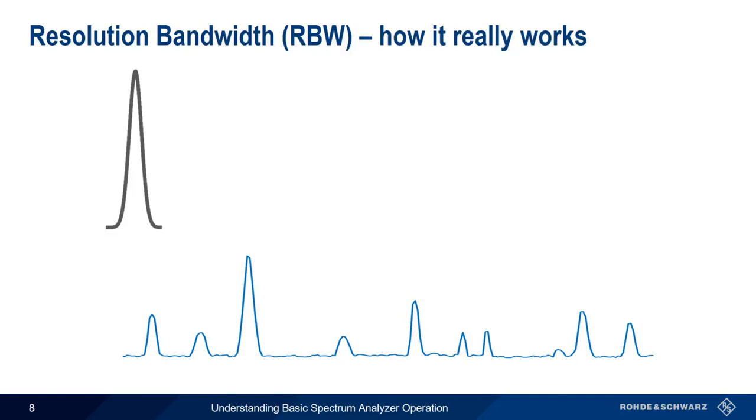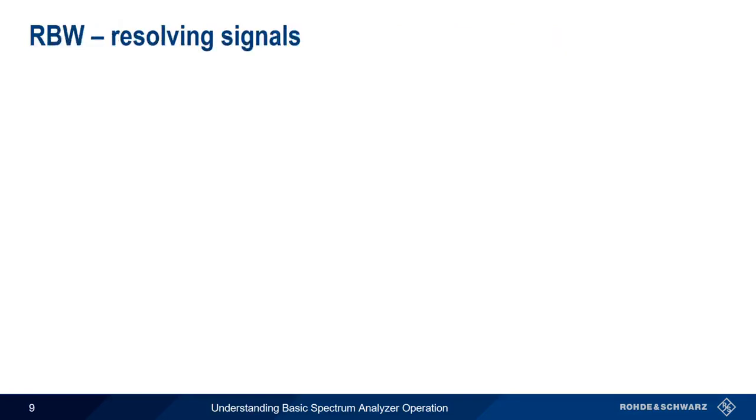Next, let's examine two ways that resolution bandwidth plays a critical role in spectrum analysis, namely separating signals and noise. Let's start with signal separation. As the name implies, one of the things that resolution bandwidth affects is our ability to separate or resolve closely spaced signals. For example, if we have two narrow signals, we can only separate them if our resolution bandwidth is smaller than the distance between these two signals.